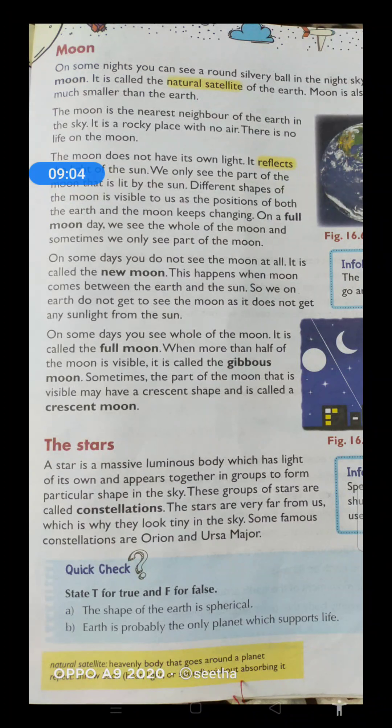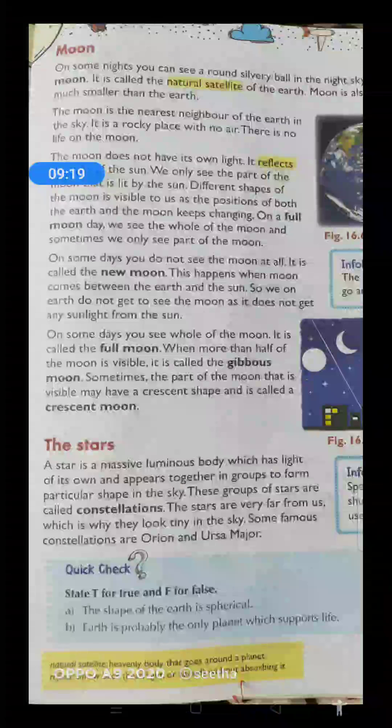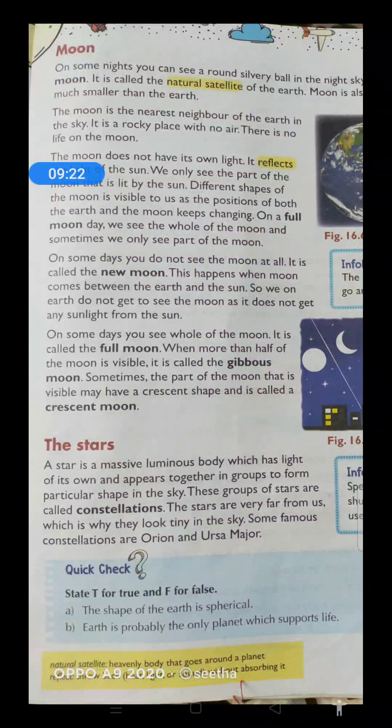Stars appear together in groups to form particular shapes in the sky. Yeh stars sab together hokar ek bada sa group form karte hain aur ek group form karke ek particular shapes bhi form karte hain. These groups of stars — is particular group of stars ko hum bolte hain constellations. Aisi group of stars ko, matlab bahut saare stars milke, ek particular shape mein form hote hain — aisi group of stars ko hum bolte hain constellations.